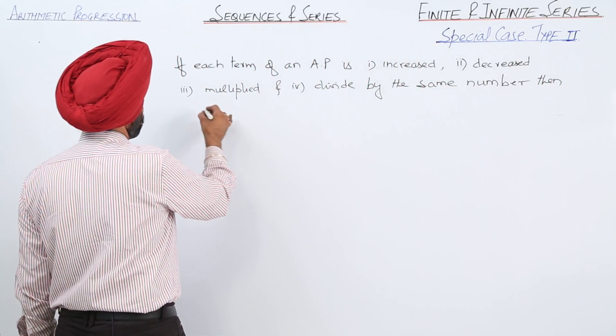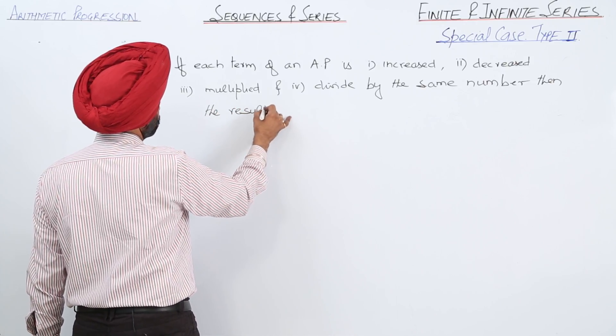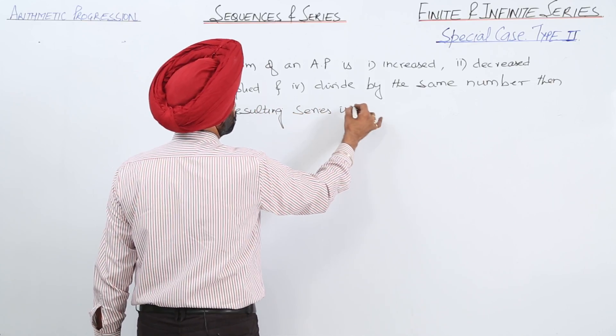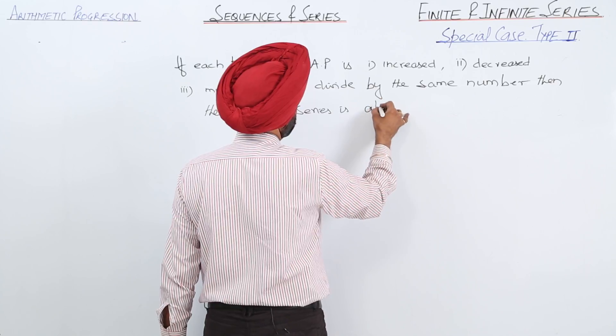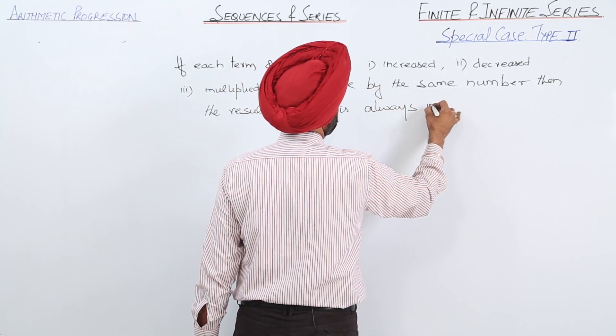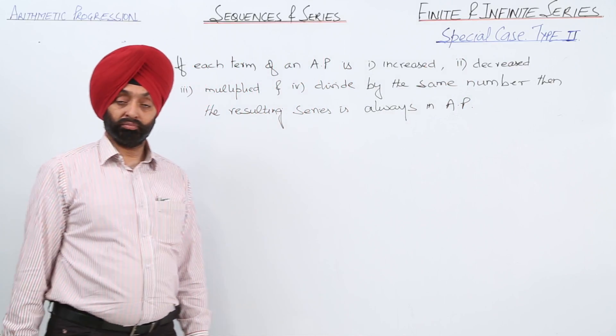then the resulting series is always in AP. Is it clear?